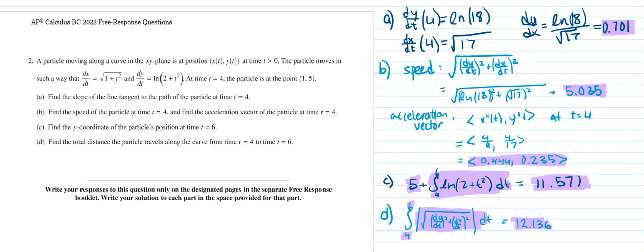Part C asks to find the y-coordinate of the particle's position at time t equals 6. The initial condition at t equals 4 is given at the point (1, 5). I set up my integral from t equals 4 to 6, with the initial position out front. Then I integrated dy/dt since we're looking for the y-coordinate. The answer is 11.571. The highlighted parts show the initial position, the integral, and the final answer.